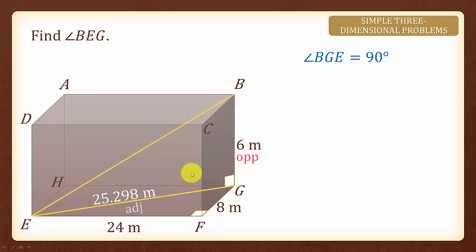BG will be the opposite and EG will be the adjacent. Do you know which trigonometry ratio we can use? Yes, we shall use tangent theta equals to opposite over adjacent. By substituting the values we have angle BEG equals to 6 over 25.298.